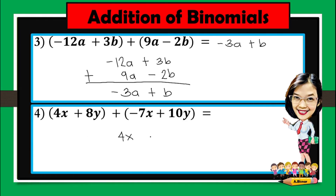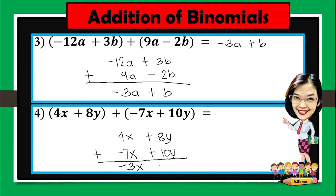For number 4, 4x plus 8y plus negative 7x plus 10y. So 4x plus negative 7x is negative 3x. And then we'll add 8y and 10y since they are both positive, giving us 18y. And the final answer will be negative 3x plus 18y.